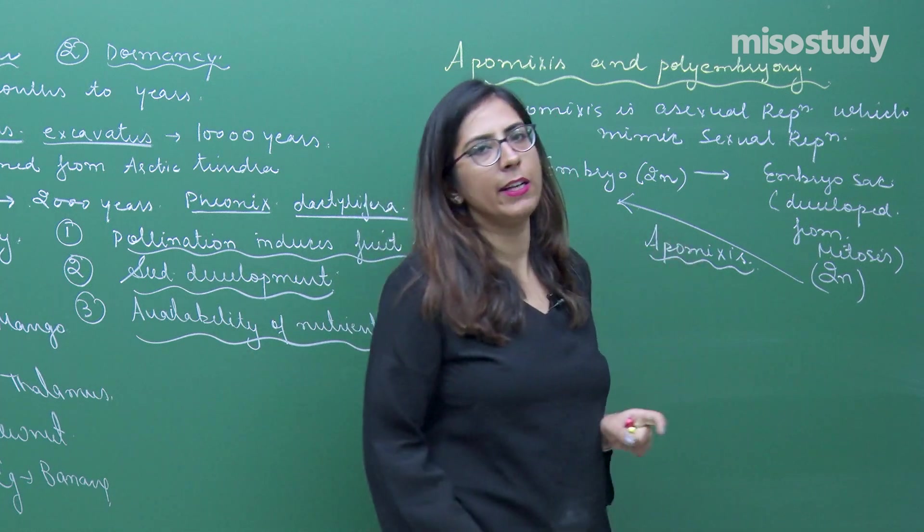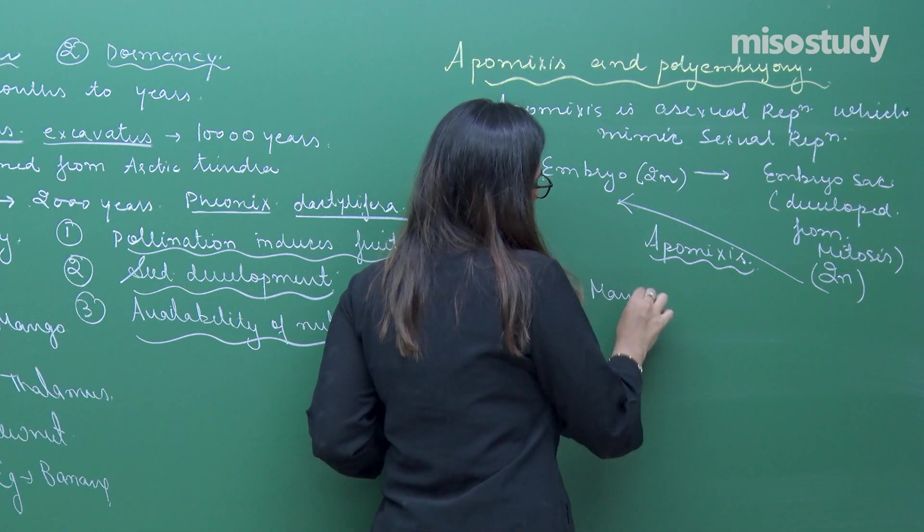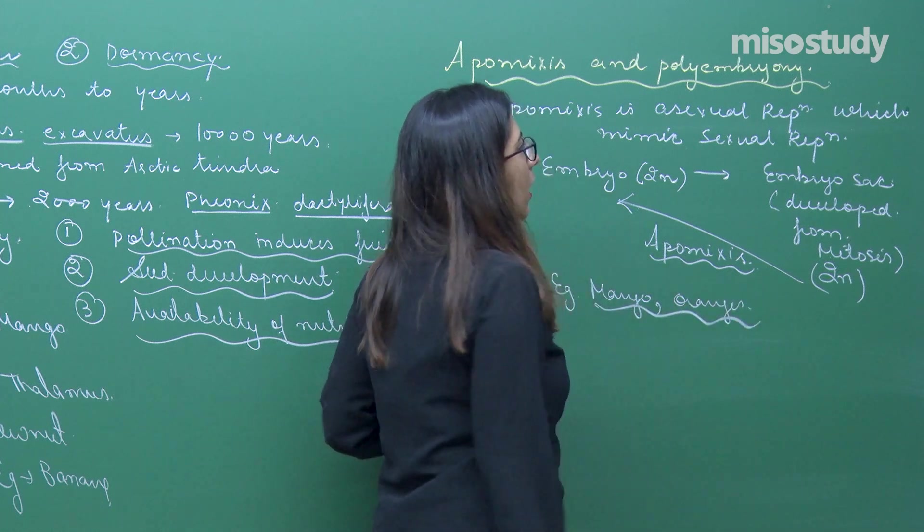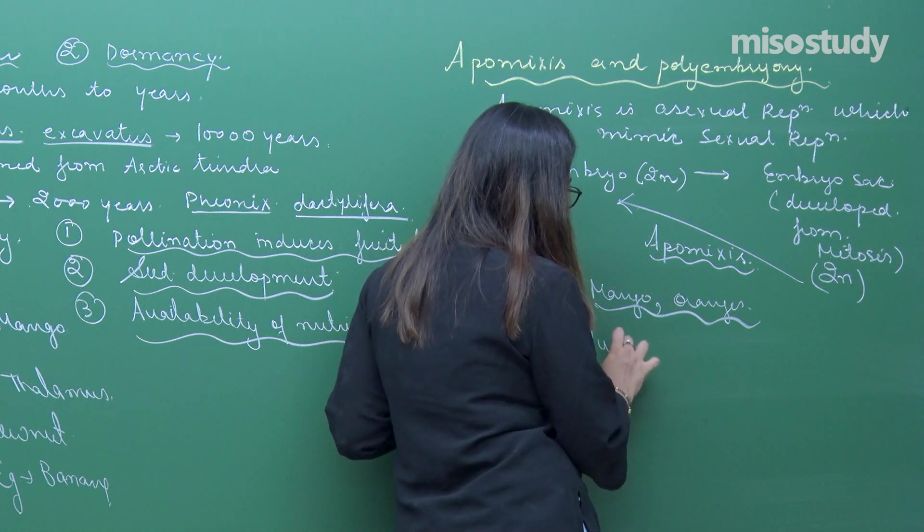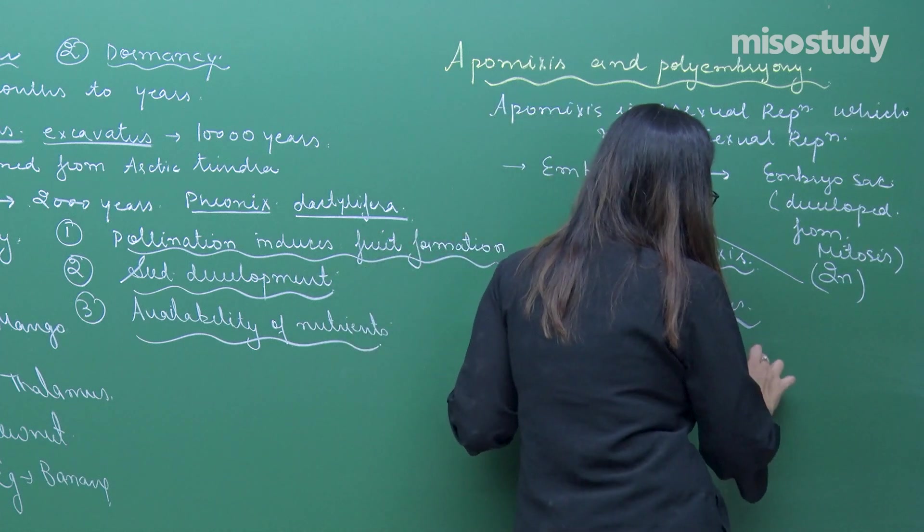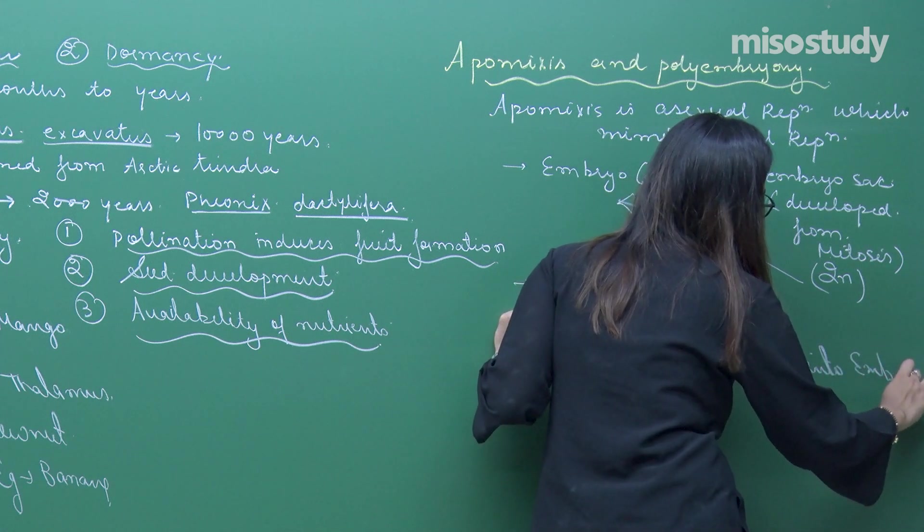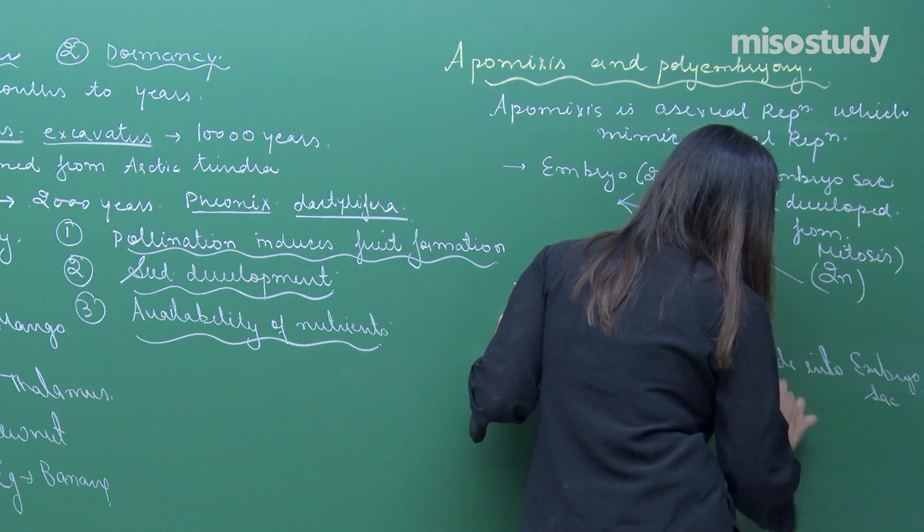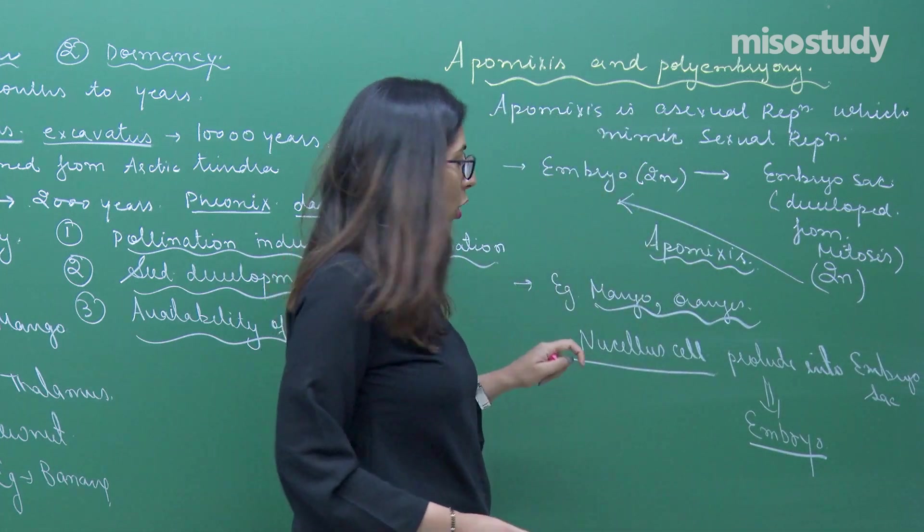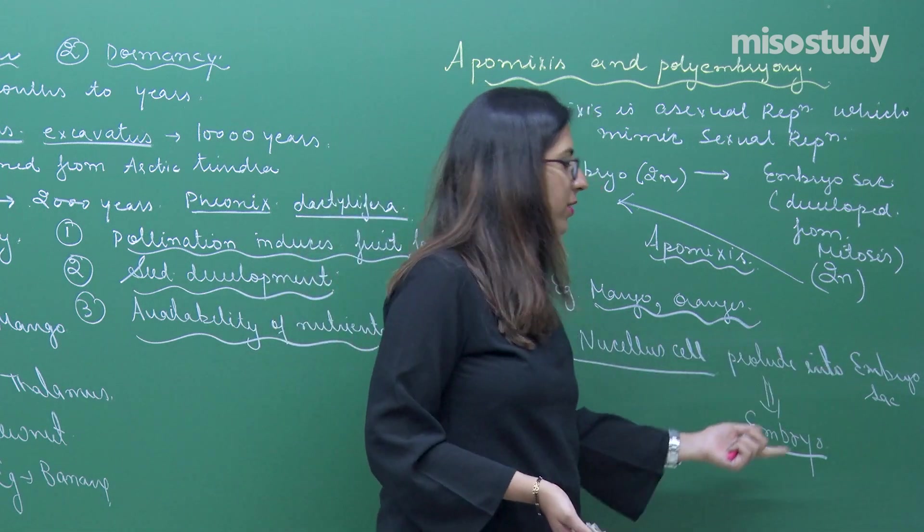You can take an example of mango or oranges. In case of mango and oranges, there are certain cells like nucellus cells. These cells protrude into embryo sac and form the embryo. Not only the nucellus cells, sometimes the integumentary cells also protrude into the embryo sac and form the embryo.